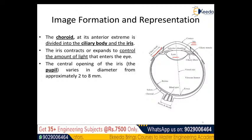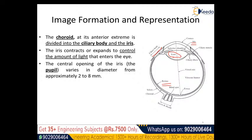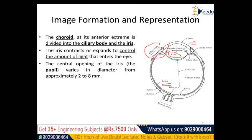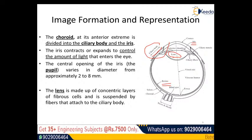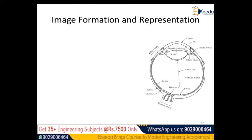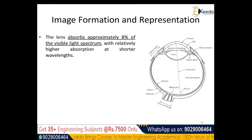The lens is made up of concentric layers of fibrous cells suspended by fibers attached to the ciliary body. It absorbs approximately 8 percent of the visible light spectrum, with relatively higher absorption at shorter wavelengths.